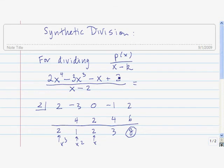So what we get when we divide 2x to the fourth minus 3x cubed minus x plus 2 by x minus 2 is 2x cubed plus x squared, 1 times x squared, plus 2x plus 3, plus the remainder 8 divided by x minus 2.